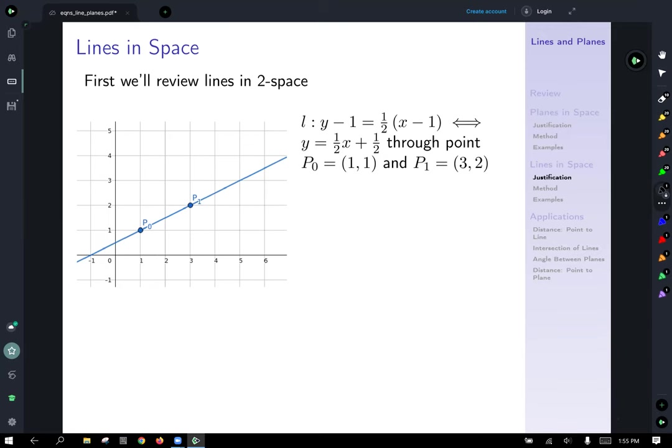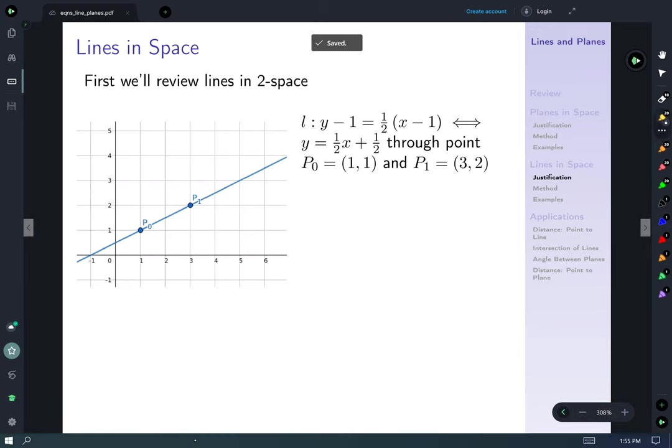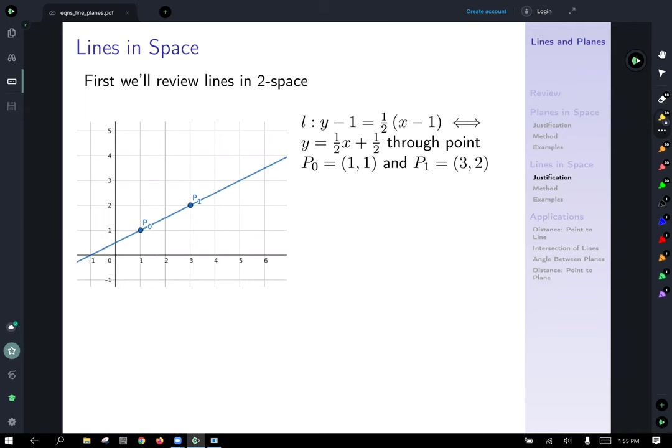So now that we've talked about planes, the title of the lecture was Planes and Lines in Space. So now it's time to talk about lines in space. Let's take a review of lines in two space. So this line L is going to be y minus one is equal to one half times the quantity x minus one. Algebra that into shape, and you've got y is equal to one half x plus one.